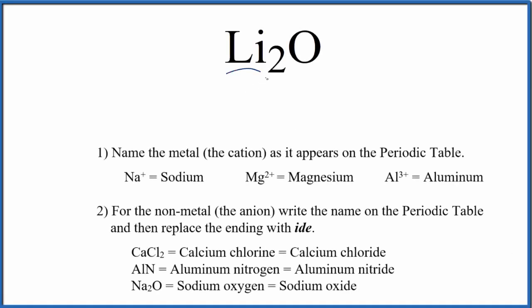To write the name for Li2O, we first need to recognize that lithium is a metal and oxygen is a nonmetal. So when we have a metal and a nonmetal, we have an ionic compound, and we use these rules here to write the name for Li2O.